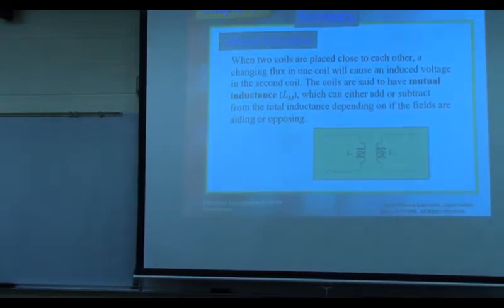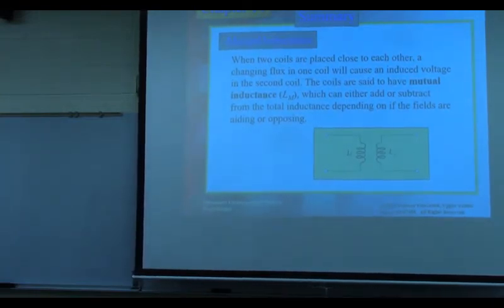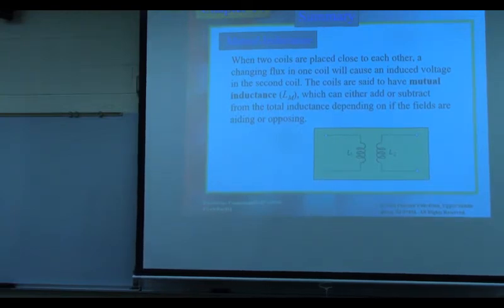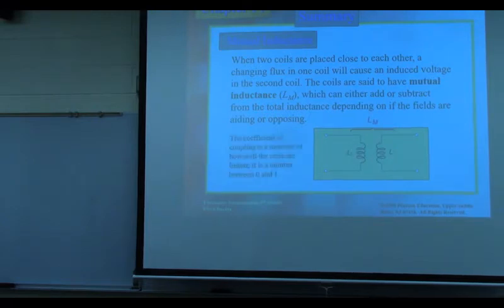Depending on the orientation, the flux may add to or subtract from the existing flux. Once we have flux, we are going to have an induced voltage and current in the second coil — that is a transformer. The inductance of the first coil is L1, the second is L2, and in between we have Lm, called mutual inductance.